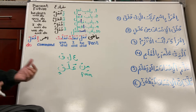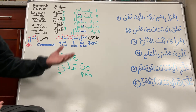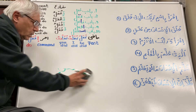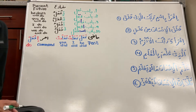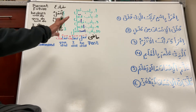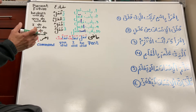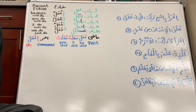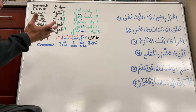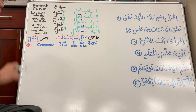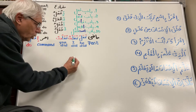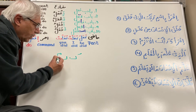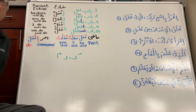Then Allah subhanahu wa ta'ala says iqra again — the same word, recite — and then wa rabboka, 'and your Lord.' The next word is al-akramu. The root letters are kaf, ra, and mim. The word we say is kareem — quranic kareem — we say this all the time. I want to point out something new here.